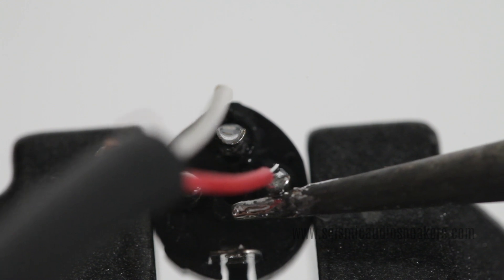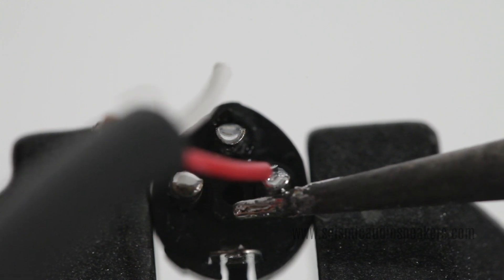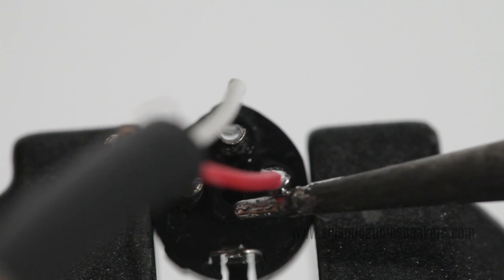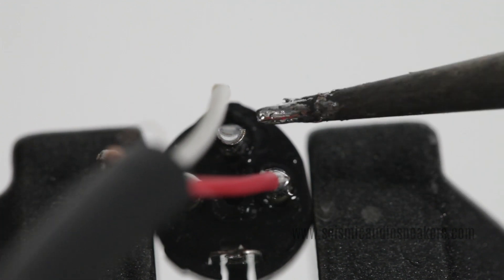Reheat the pin 2 cup to melt the solder and connect the red wire first. Hold it for a few seconds for the solder to cool.